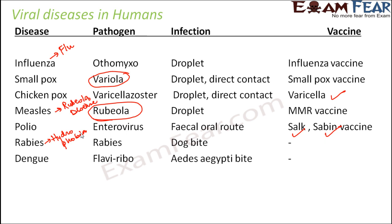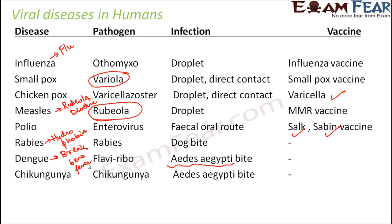Dengue fever is caused by the pathogen flavivirus and the infection spreads through the bite of the mosquito Aedes aegypti — when this mosquito bites a person, the infection spreads from one person to another. Dengue fever is also known as break-bone fever. The same mosquito, Aedes aegypti, can also cause Chikungunya, where the pathogen is the Chikungunya virus.